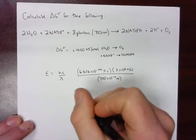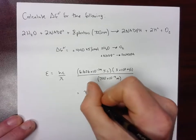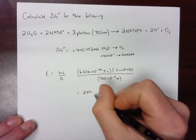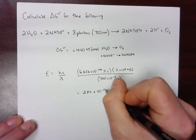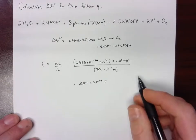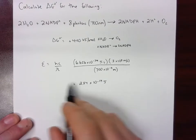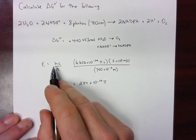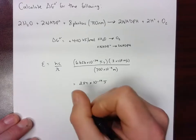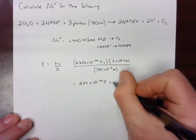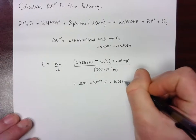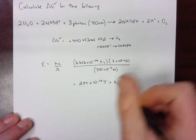If we do this calculation, we end up with a value of 2.84 times 10 to the negative 19 joules, but that's just for one photon. So we've got to convert this into moles, so we'll take this value and multiply it by Avogadro's number.